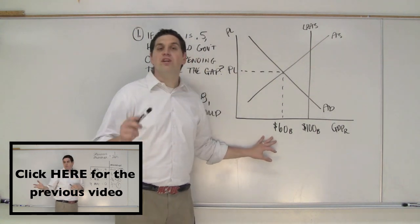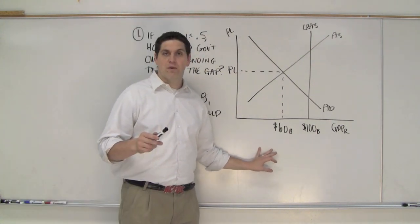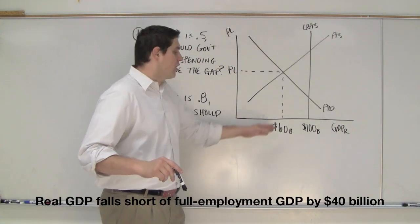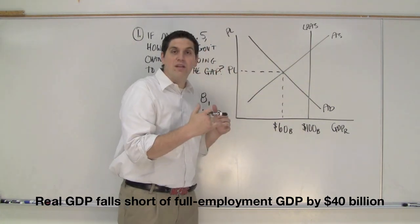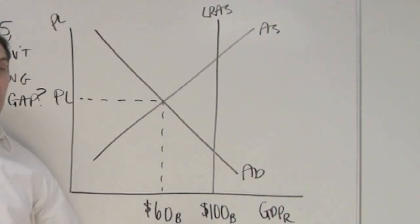Okay, take a look at this graph. Does it have a recessionary gap or inflationary gap? Okay, it's a recessionary gap, right? The current output is 60 billion. Where we want to be is 100 billion. 40 billion difference between where we want to be and where we actually are.